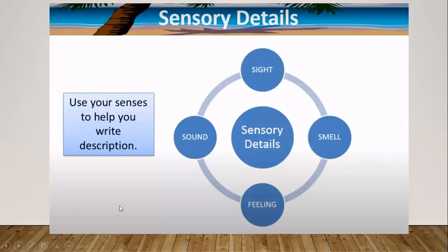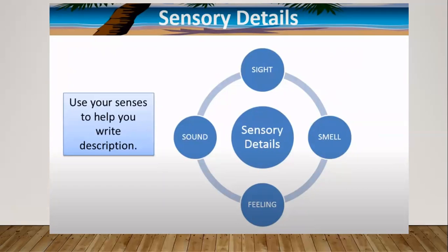We use specific details by using sensory details. We use our senses to help us write description. Our senses include sight, smell, feeling, and sound. They also include taste, but sometimes, unless you're writing about a restaurant, it's hard to add taste into the description.